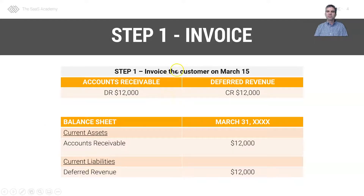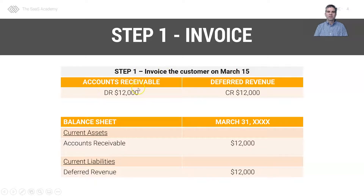So we just closed this contract, executed by both parties, so we can invoice the customer based on the payment terms. In this case we're invoicing right away, so we invoice the customer on March 15th. With this transaction, we debit accounts receivable for $12,000 and we credit deferred revenue for $12,000, so on our balance sheet we'll see $12,000 in AR and $12,000 in deferred revenue.